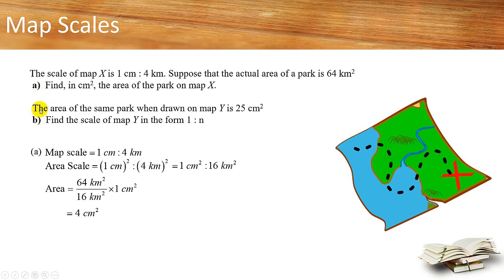And now for part B. The area of the same park when drawn on map Y is 25 cm². For part B, find the scale of map Y in the form of 1 is to n. Now the keyword is over here. Since the park is the same, it means that the actual area remains the same at 64 km². Does it make sense?